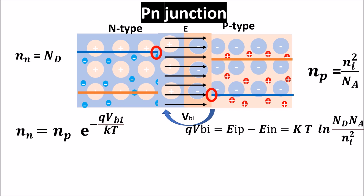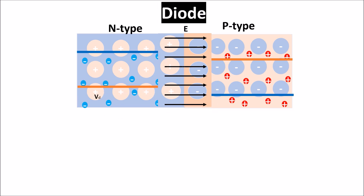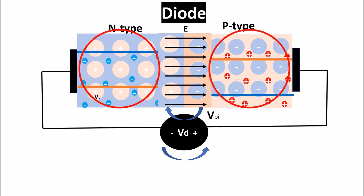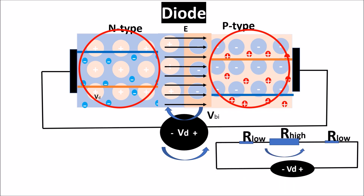If we now create a diode by putting metal contacts on both sides, we can apply a voltage VD on the device. The applied voltage has a direction which opposes VBI. Furthermore, the applied voltage drops almost completely on the depletion region, because the two neutral regions are full of carriers and so have very low resistance. On the contrary, the depletion region has no carriers, so it has high resistance. We have on the depletion region a new voltage VJ equal to VBI minus VD.